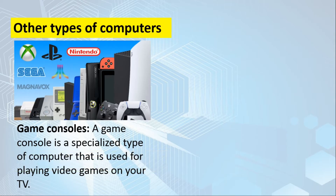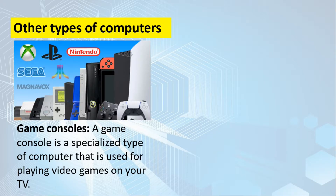Another type is the game console. A game console is a specialized type of computer used for playing video games on your television. Examples include the Nintendo Switch, PlayStation, and Xbox. You can play role-playing games (RPG) and first-person shooter (FPS) games. You simply connect it to your television, which serves as your monitor or screen so you can see the games you're playing.